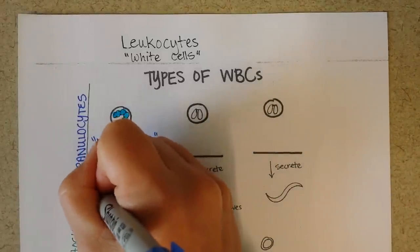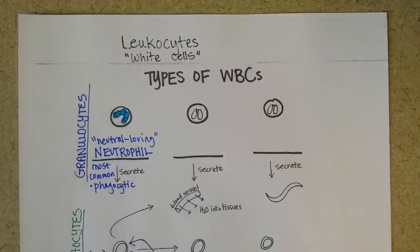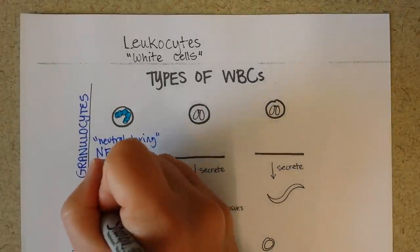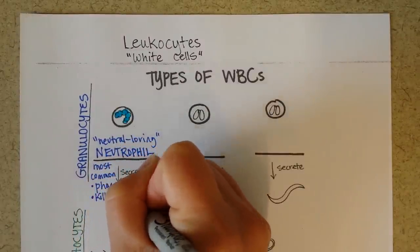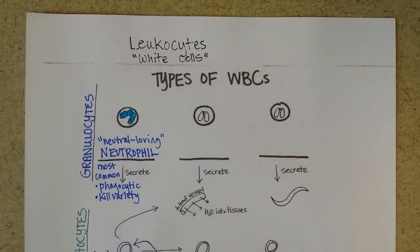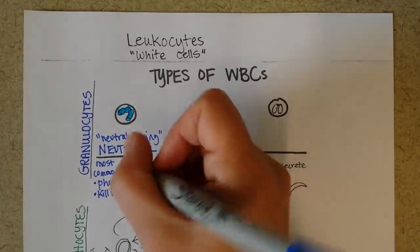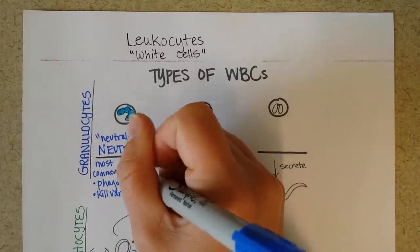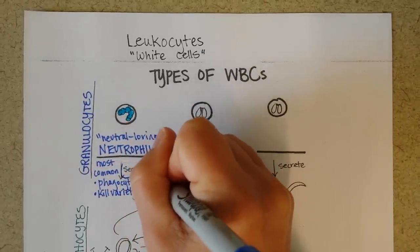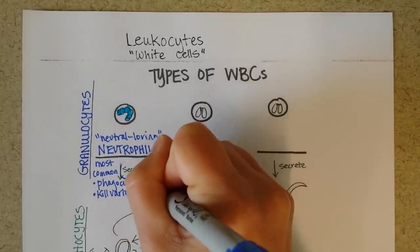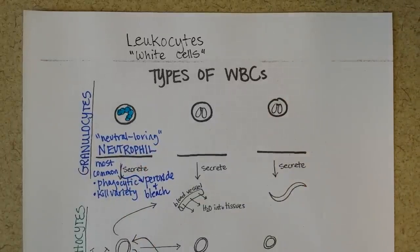Neutrophils are very phagocytic — phago means eat and cyte means cell — so they can kill a whole variety of different kinds of pathogens. They're sort of the jack of all trades; if you were cleaning your house, this would be the go-to cleaner. They are able to secrete peroxide and bleach, so the analogy of household cleaning is not that far off.